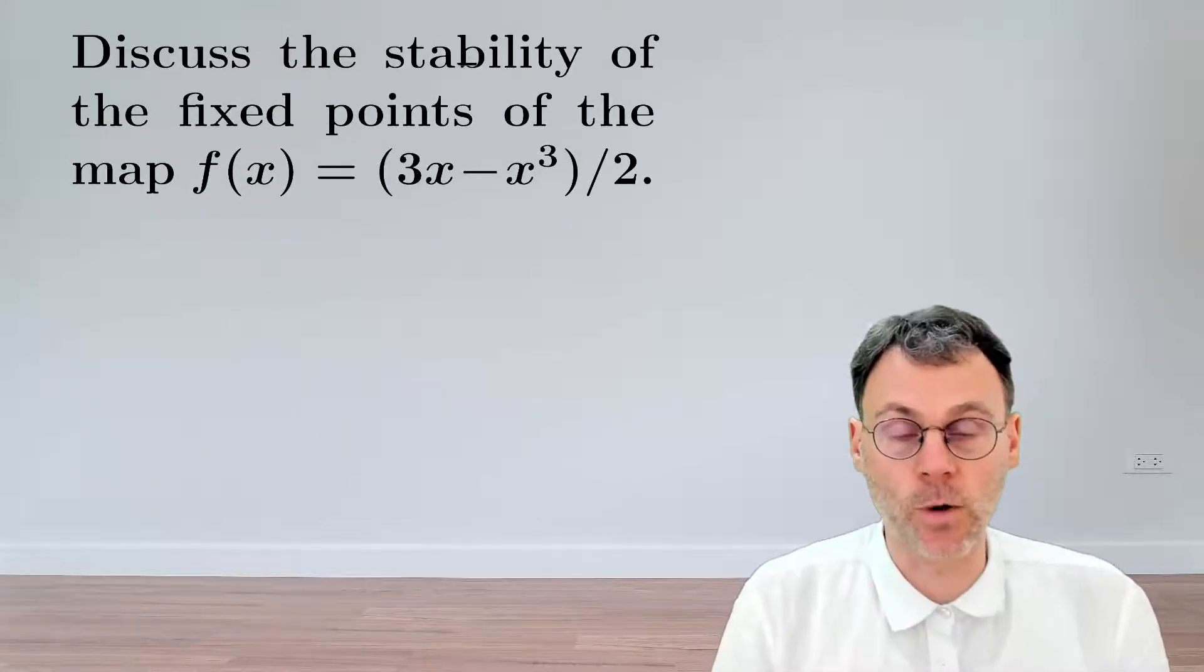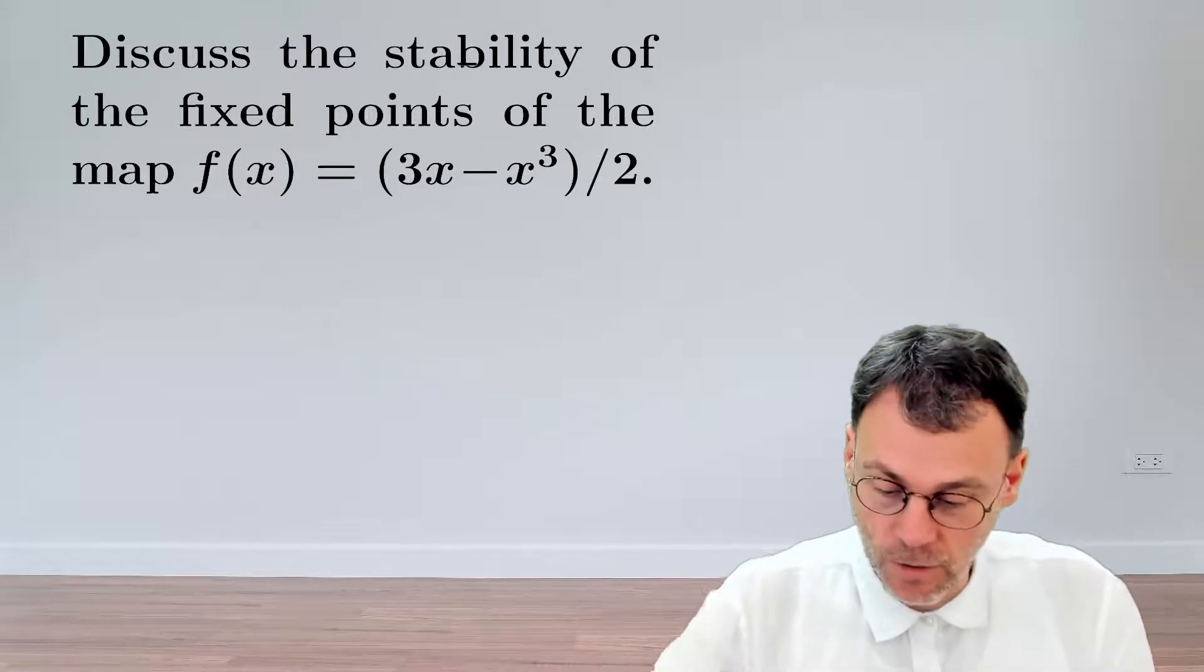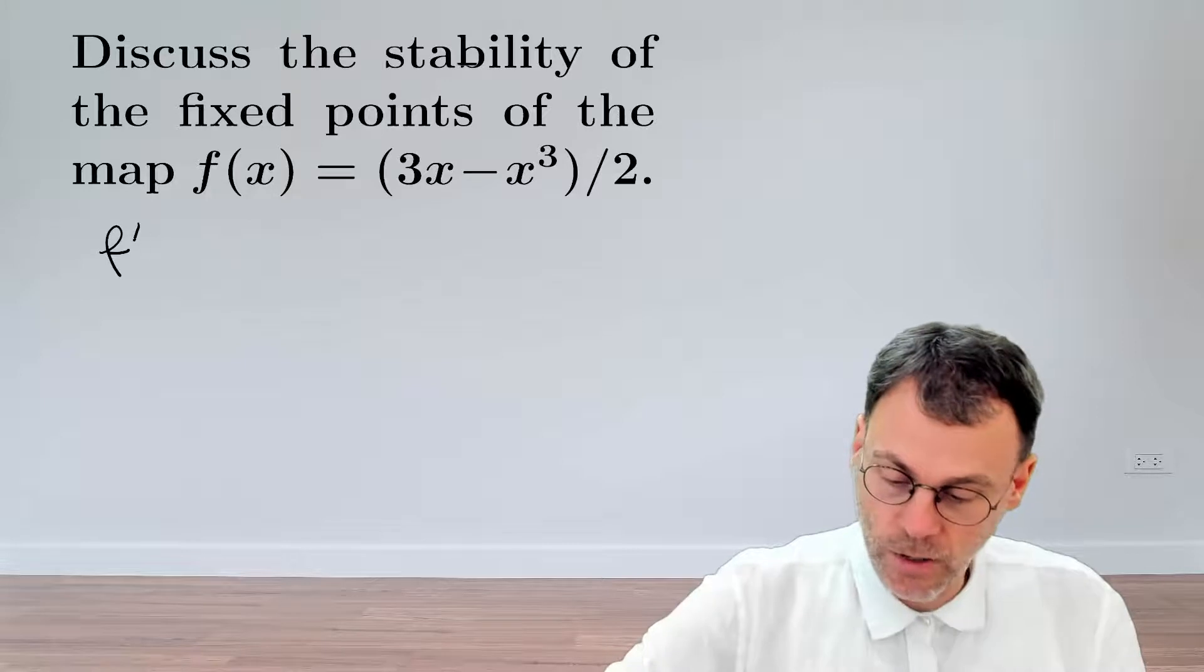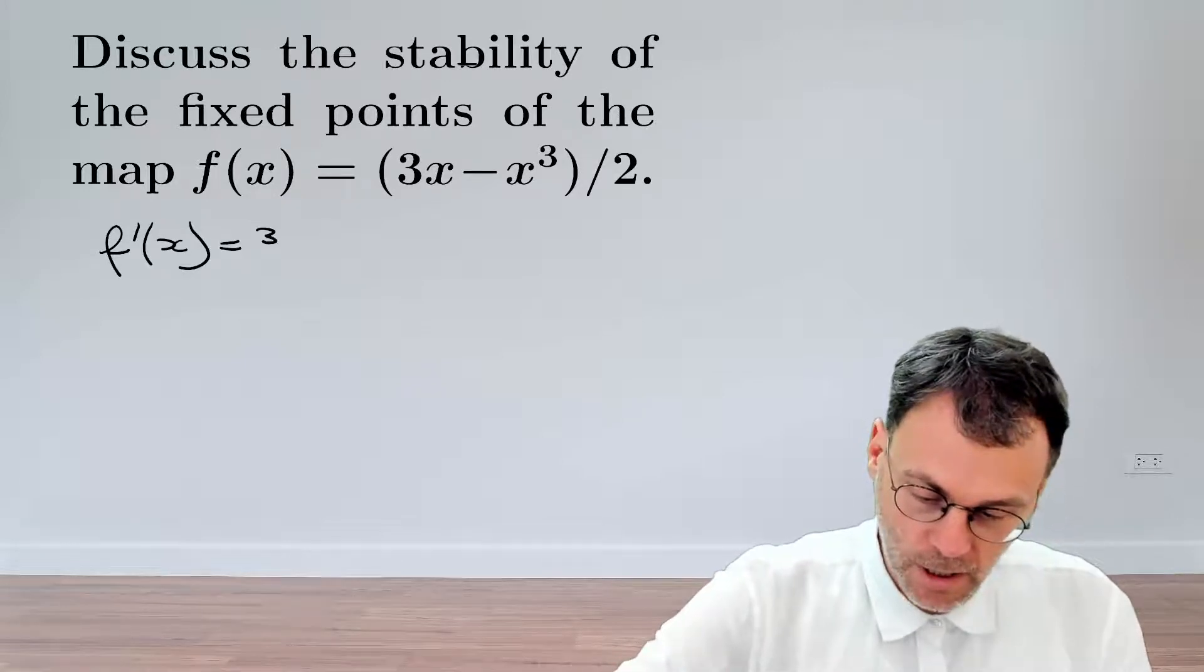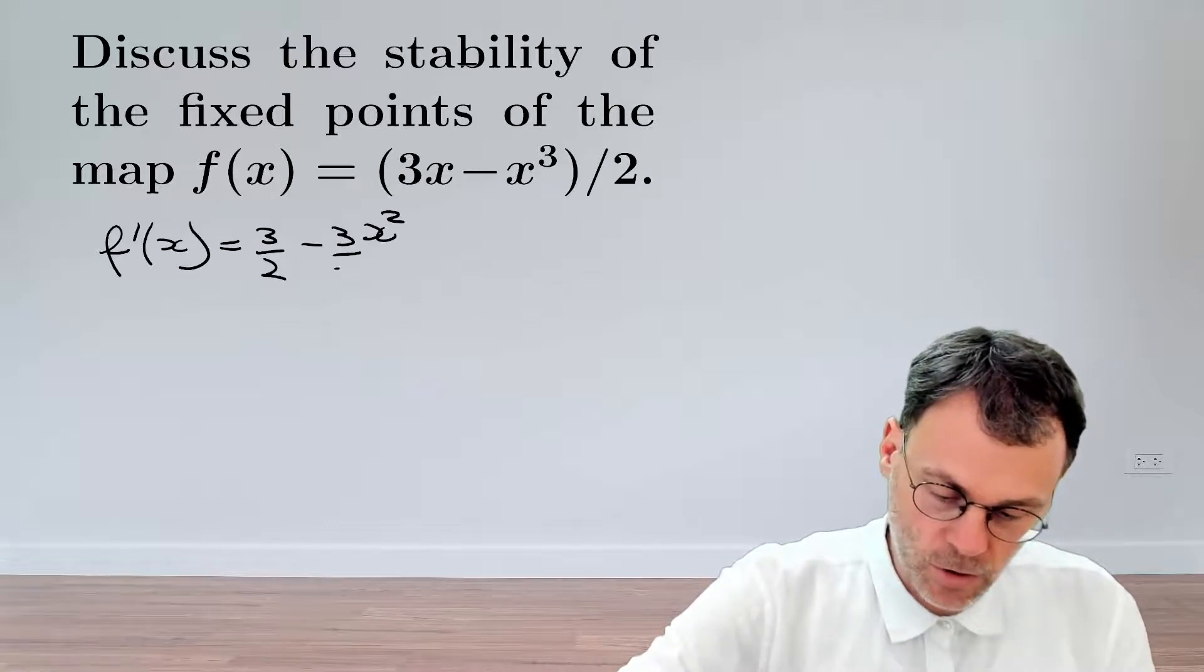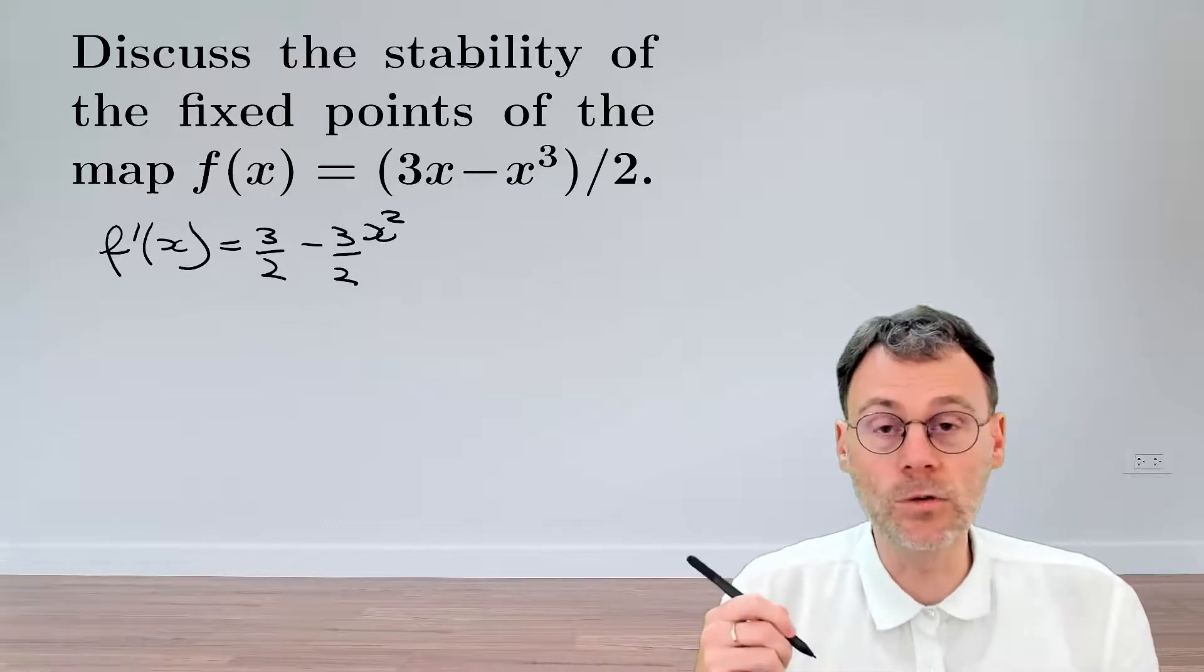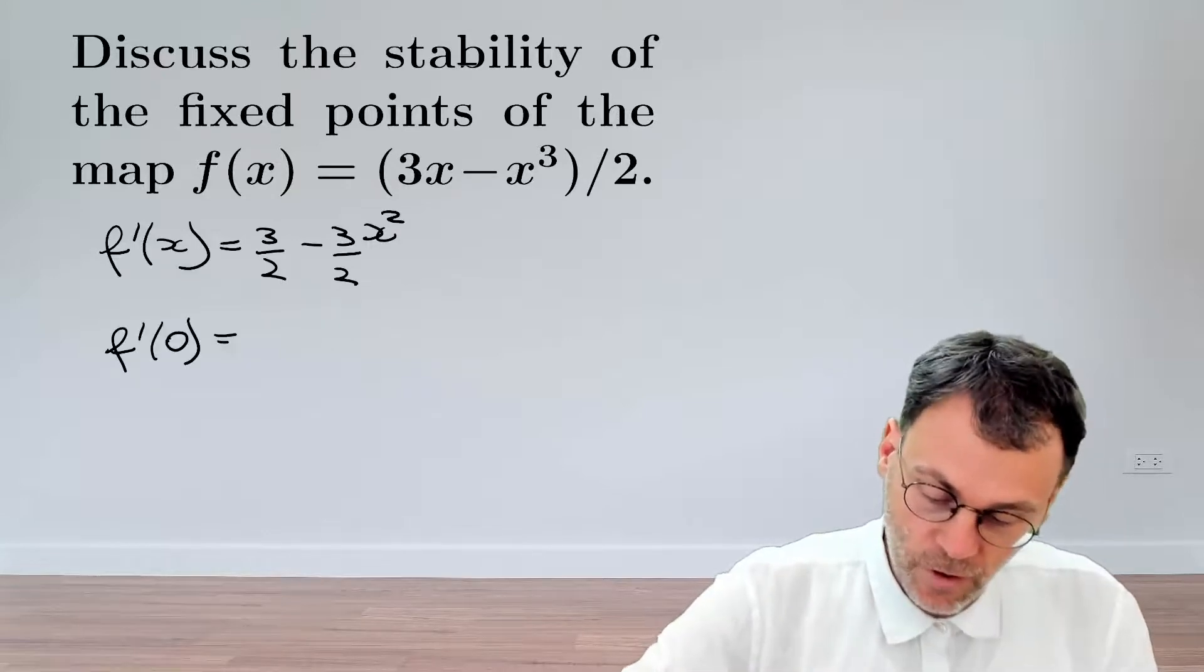Now, if we want to look at their stability, we need to look at the derivative of the map. So we need to calculate f'(x), which is going to be 3/2 - 3x²/2, and then we need to substitute our fixed points in that derivative.